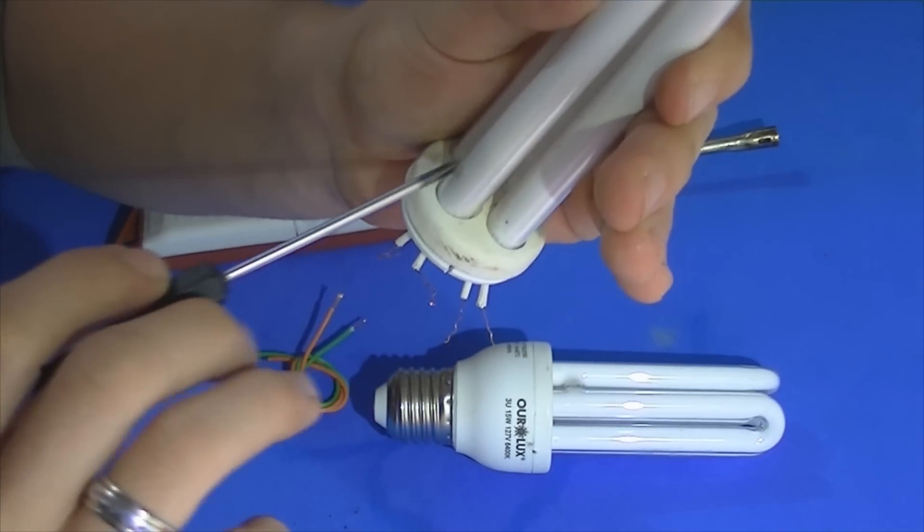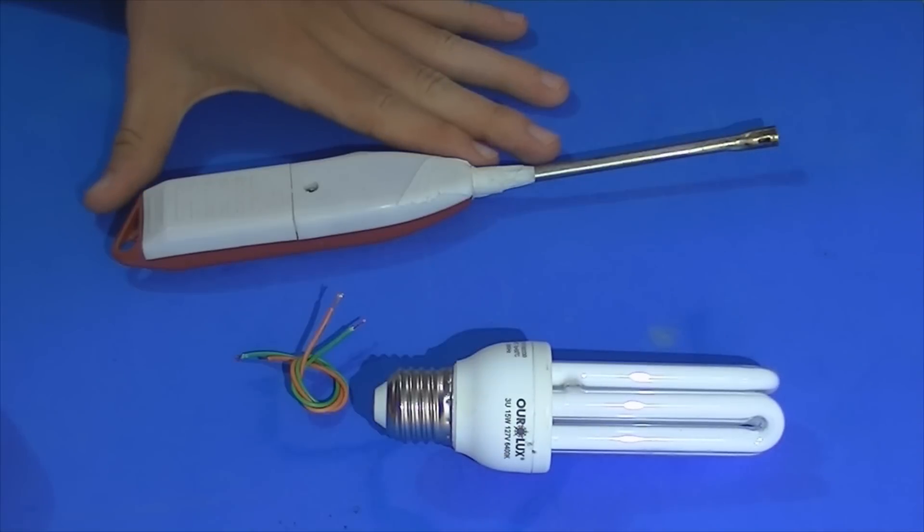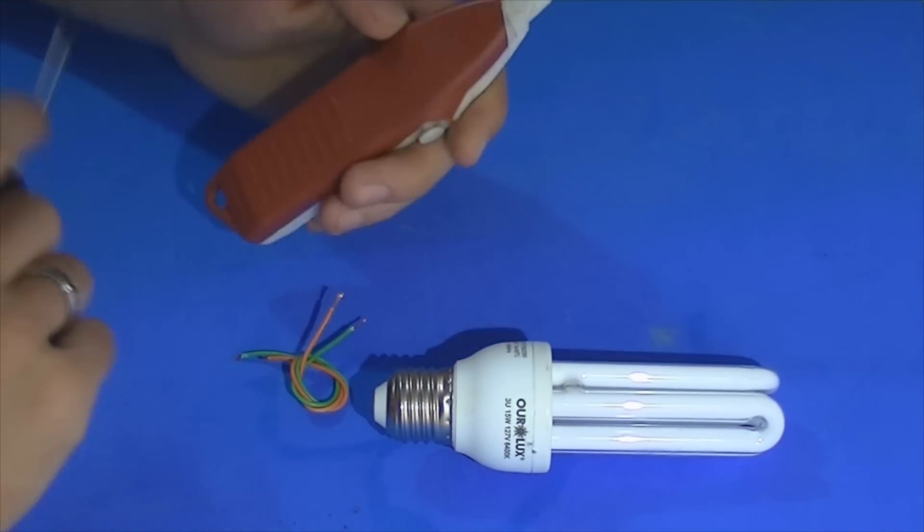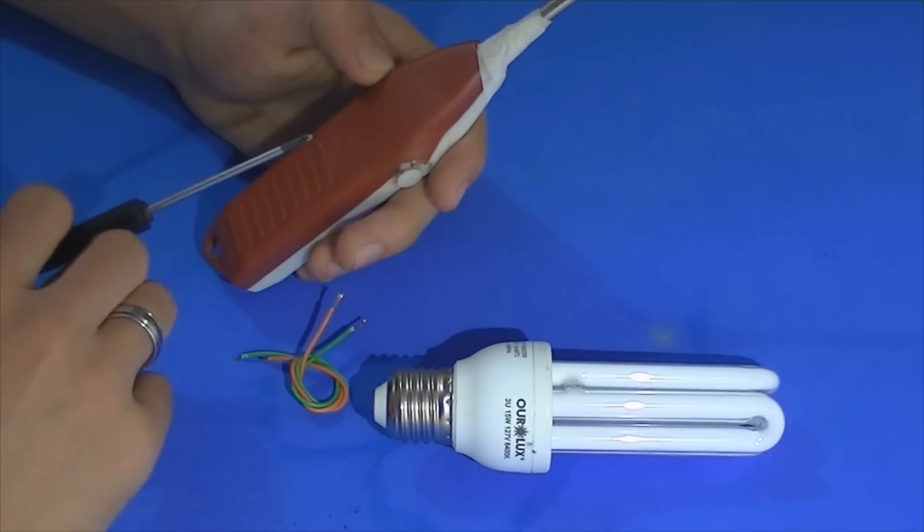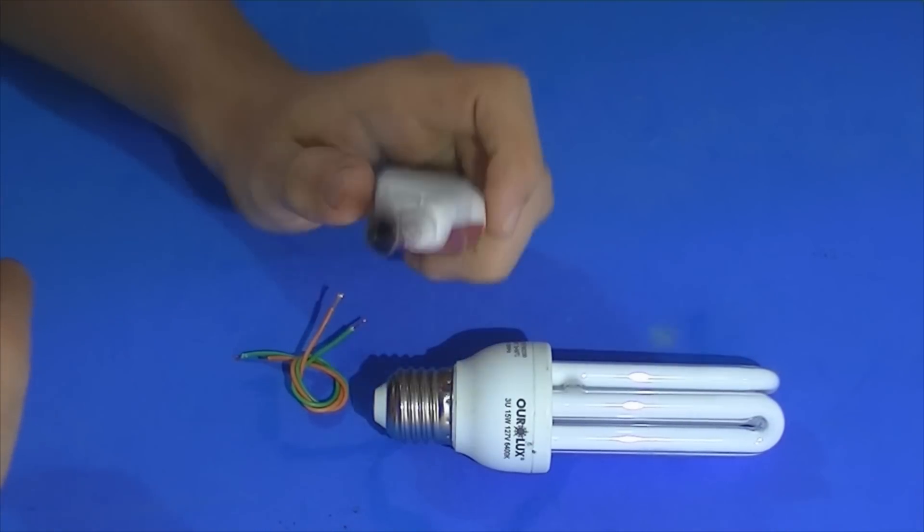Quando a lâmpada está assim é porque ela está queimada. Vamos precisar também de um acendedor elétrico. Você encontra ele em lojinhas de 1,99. Ele serve para acender o fogão.